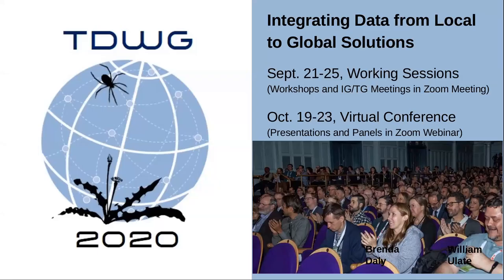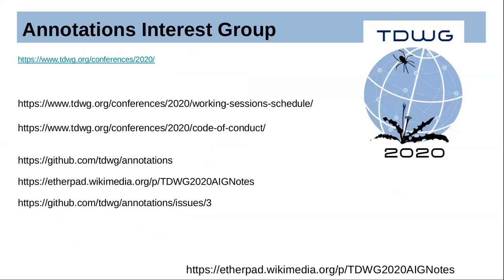We'll hear reports from various groups working with annotating biodiversity data, then work on chartering a task group for a much-needed applicability statement, and look at some example annotations for discussion. Feel free to ask questions at any time by entering a question in the chat or raising your hand in the participant list. The chat function is available for technical questions or conversing with other attendees. Please use this judiciously, as inappropriate use may result in your removal from the session. Please see our code of conduct document, linked on the slide.